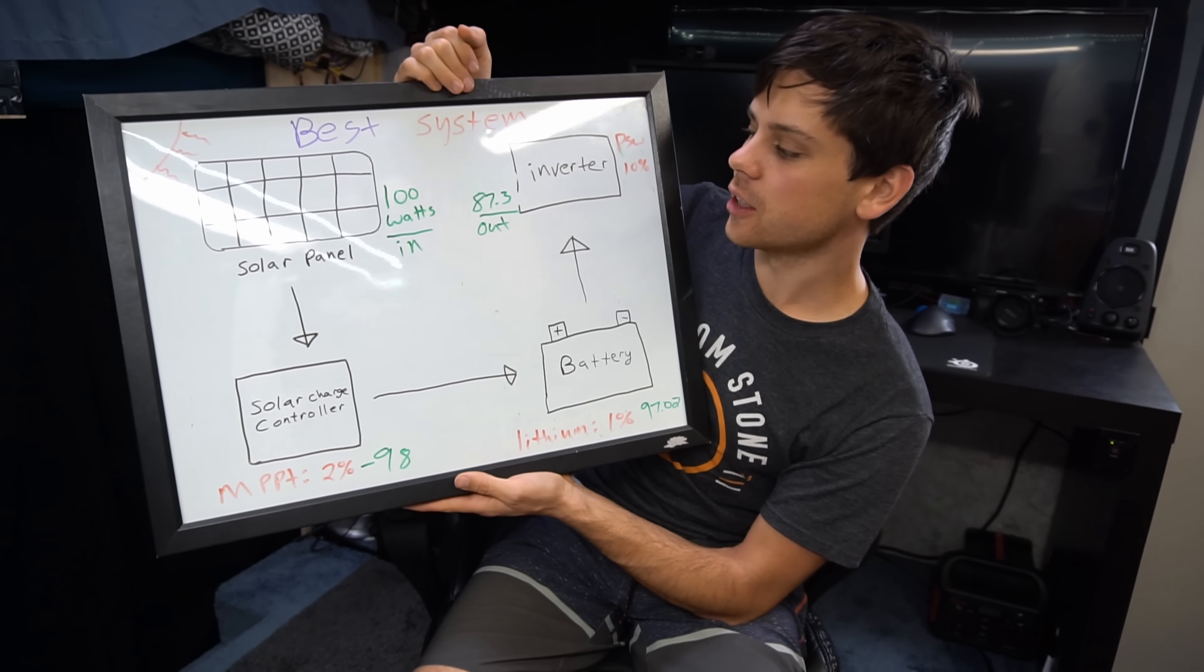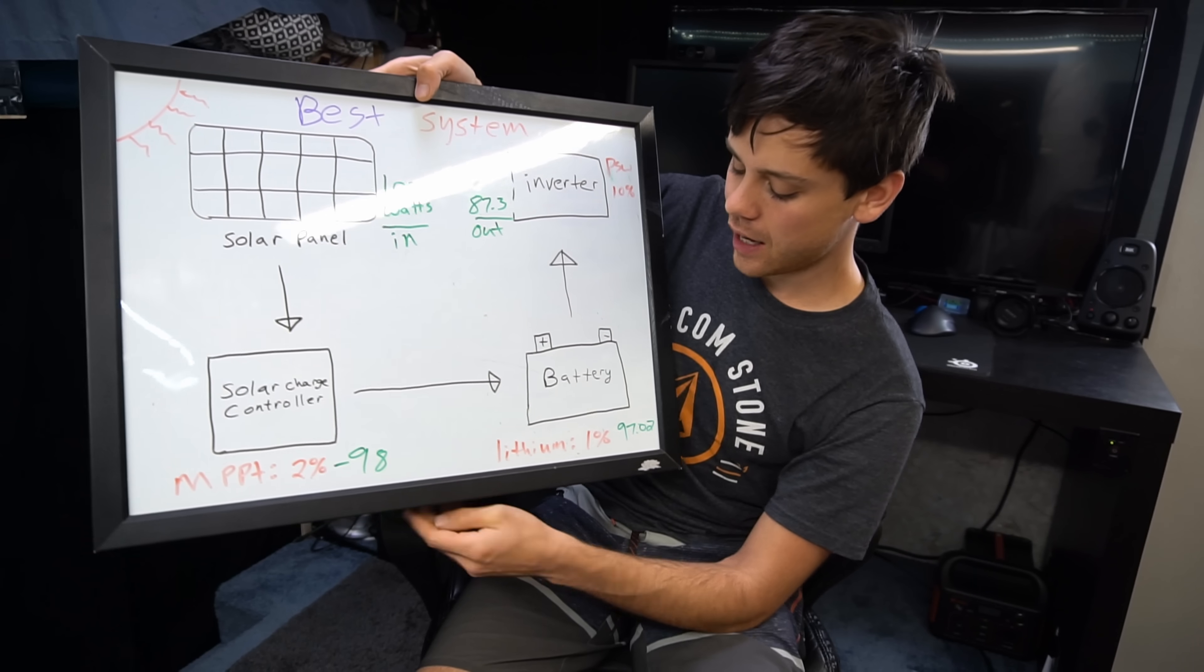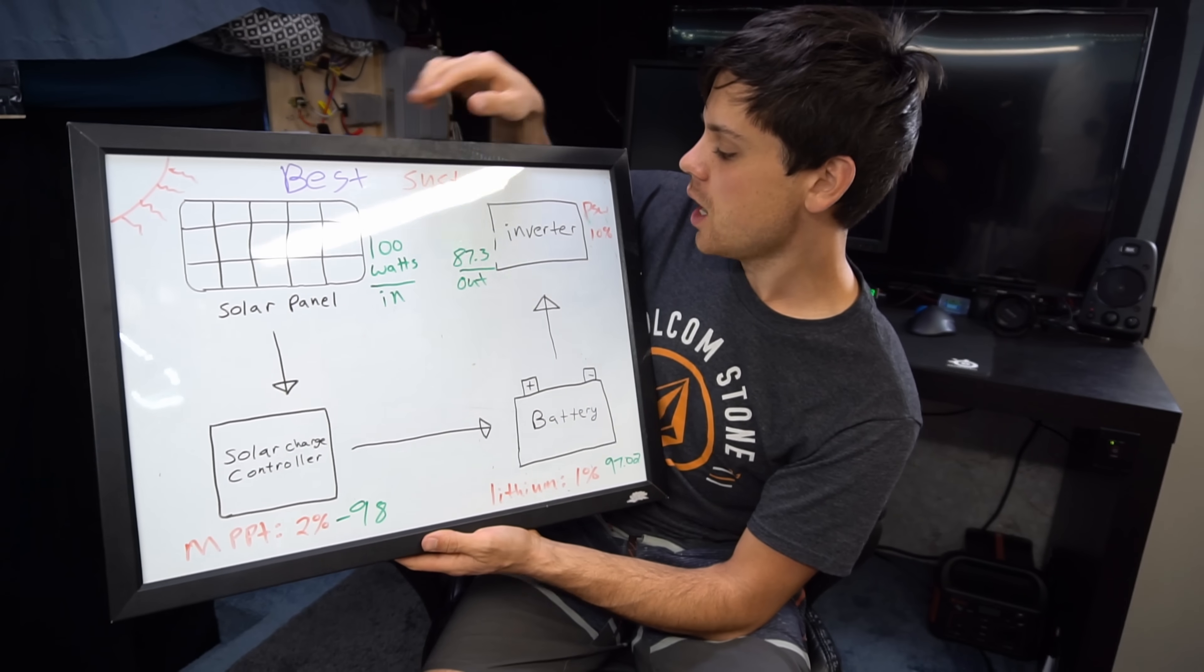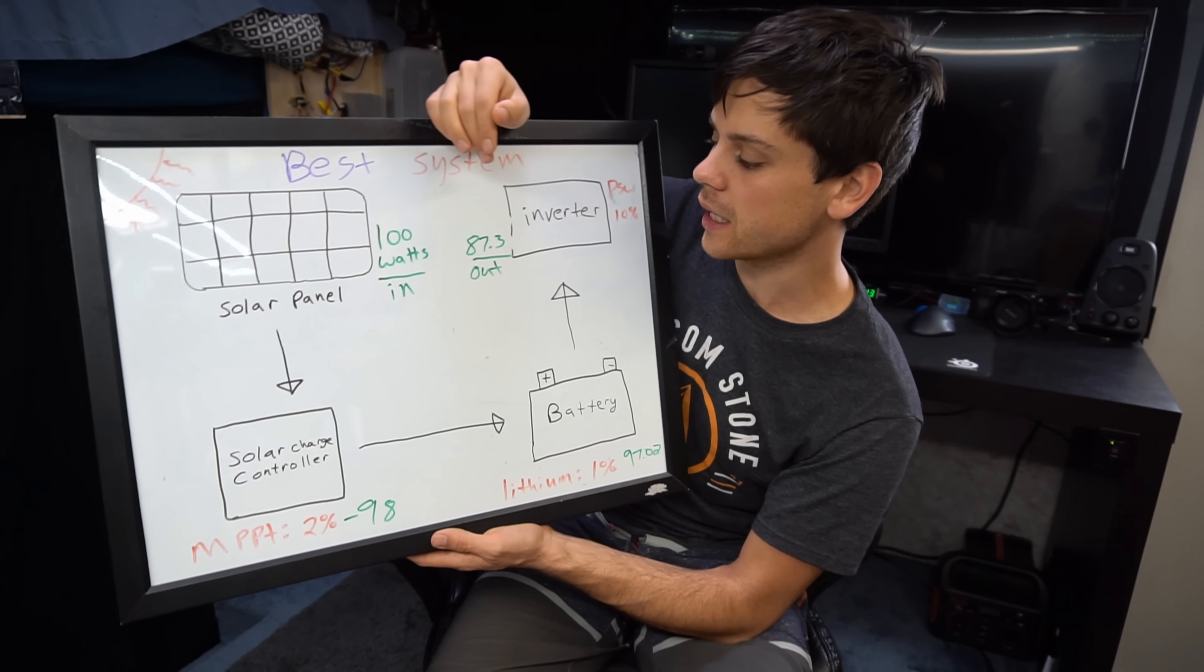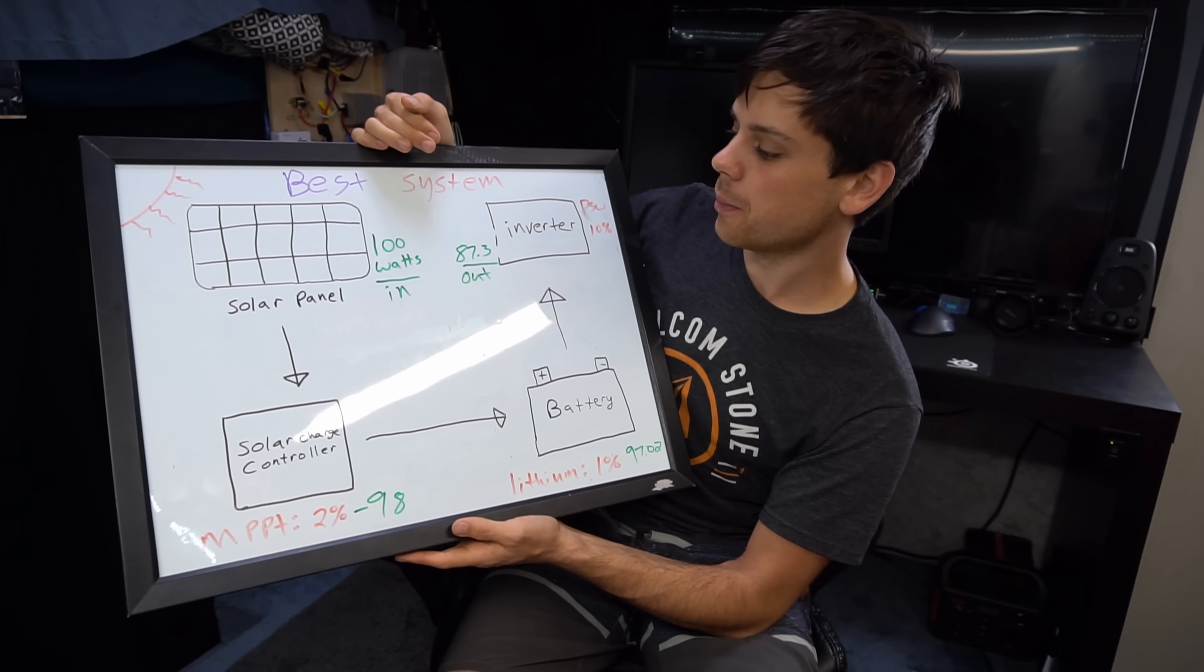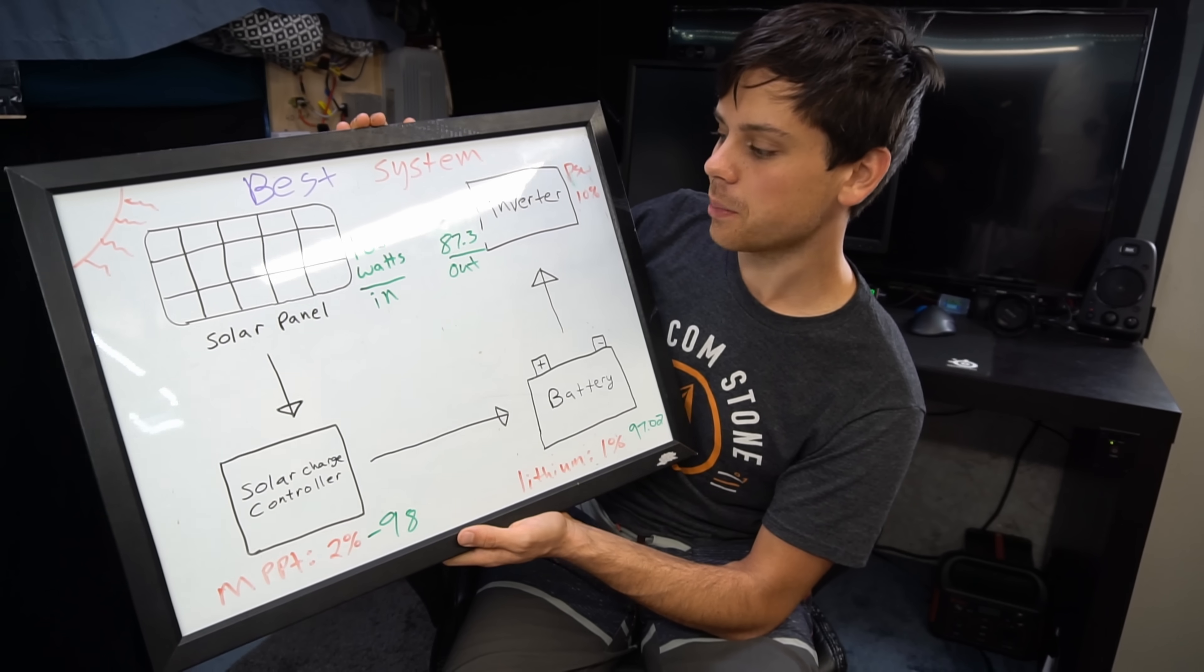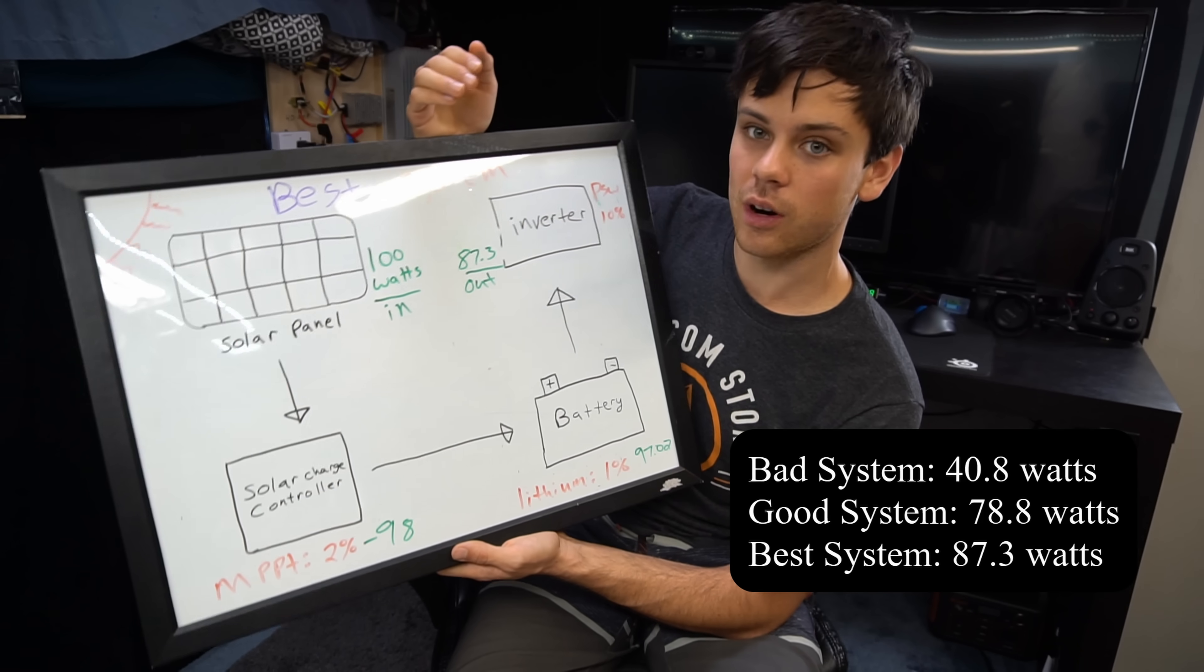And now I just calculated out this system. So we have 100 watts in. We have 2 percent loss brings it to 98. One percent loss with lithium battery brings it to 97.02 and the inverter losses of 10 percent is going to be 87.3 watts. Look at that. That is incredible. That is so crazy. If you use the right system components and you over gauge your system wires so there are the least amount of losses possible you really produce a lot more power. That's incredible.